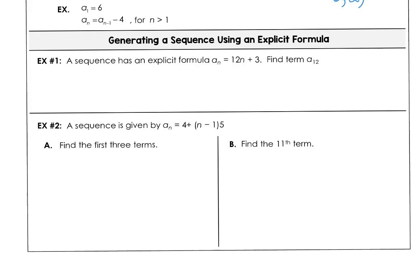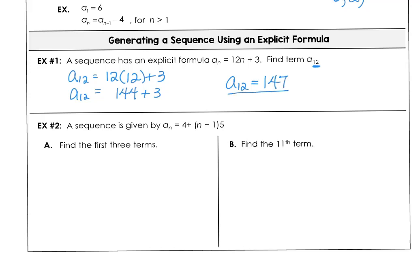In Example 1, we want to find the 12th term given the explicit rule: a sub n is 12n plus 3, and our n is 12 — we got that from the subscript. So the 12th term is 144 plus 3, which is 147. We didn't have to find all of the terms from 1 up to 12; we could go straight for the 12th term.